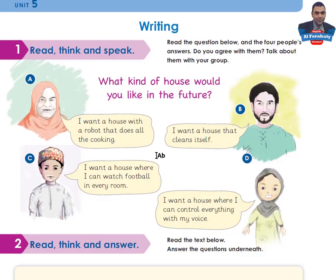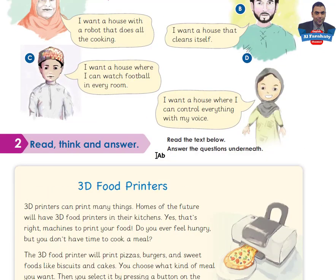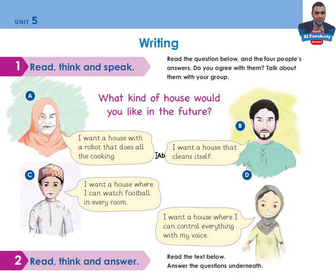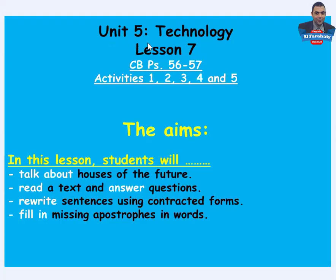What are the aims of this lesson? Let's check: Unit 5, Technology, Lesson 7, classbook pages 56 and 57, Activities 1, 2, 3, 4, and 5. The aims — in this lesson students will: talk about houses of the future, read a text and answer questions, rewrite sentences using contracted forms, and fill in missing apostrophes in words. Let's go to page 56 of your classbook.